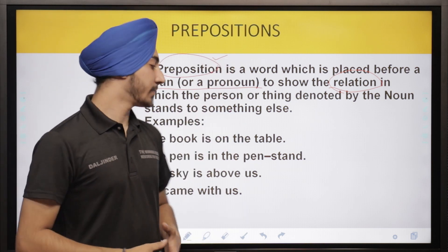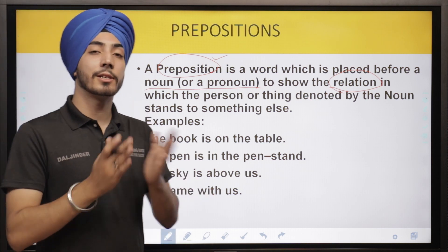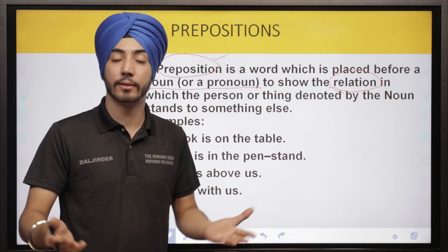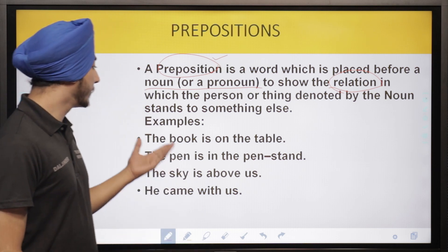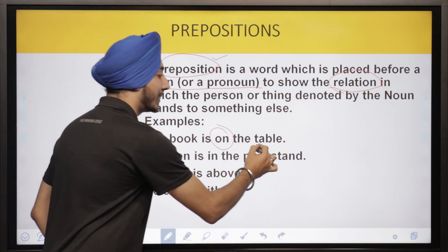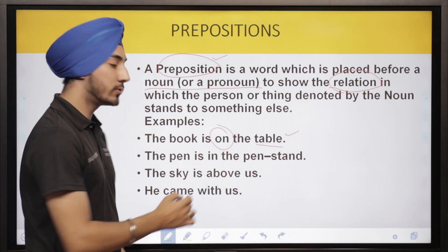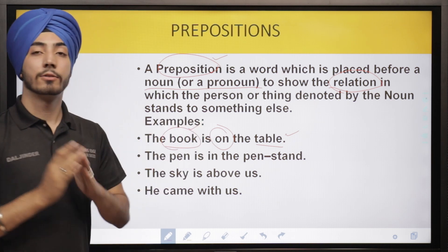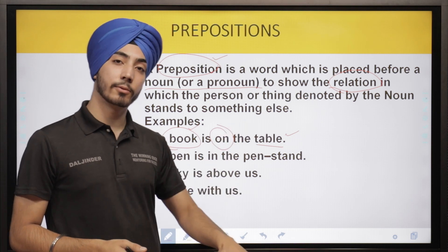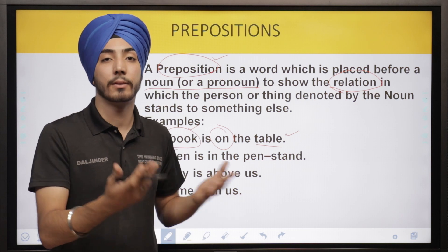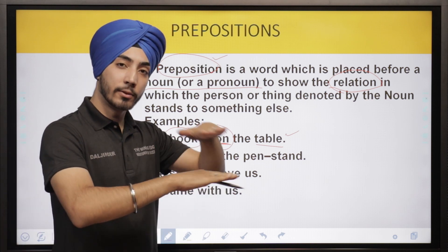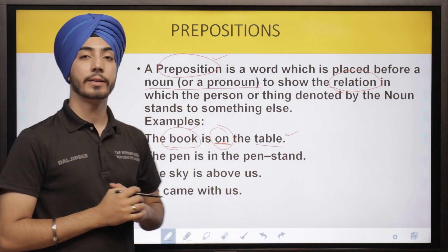Now let's understand what the examples of prepositions are and where we use them. For example, we say 'for,' 'between,' 'among' — all are examples of prepositions. For instance: 'The book is on the table.' Two things are there — the table and the book. How do we know the relation between the book and the table? By the use of the preposition 'on.' This clearly indicates that the book is on the table.